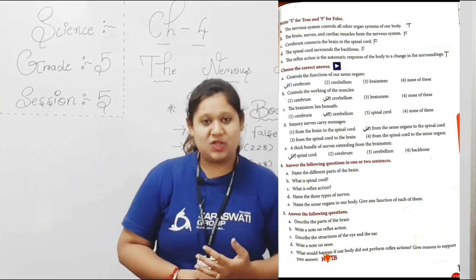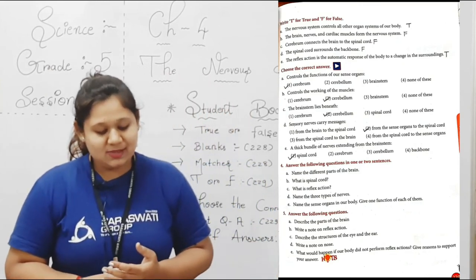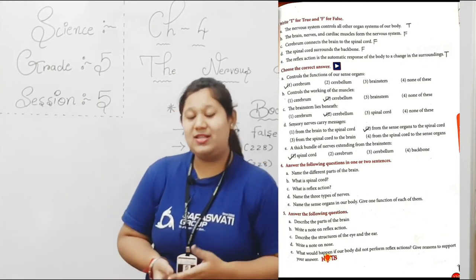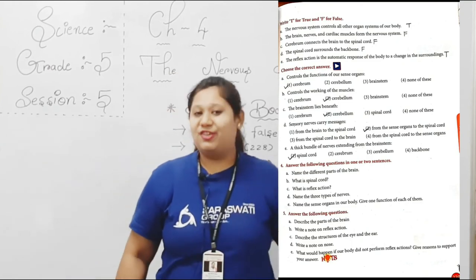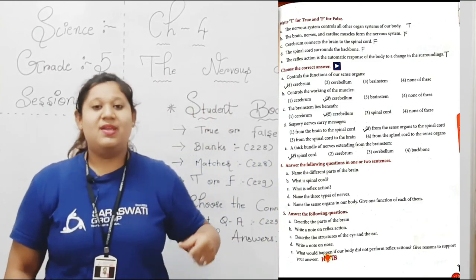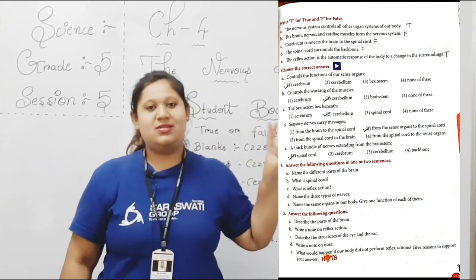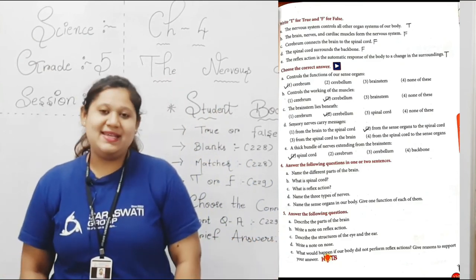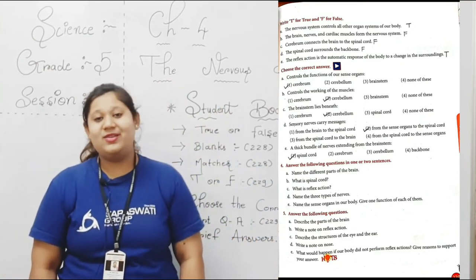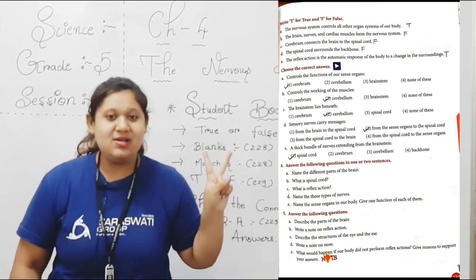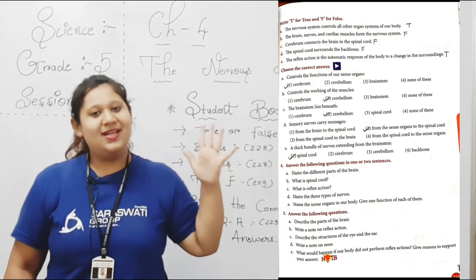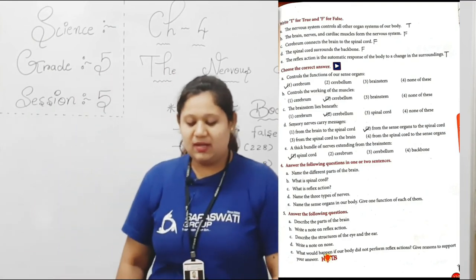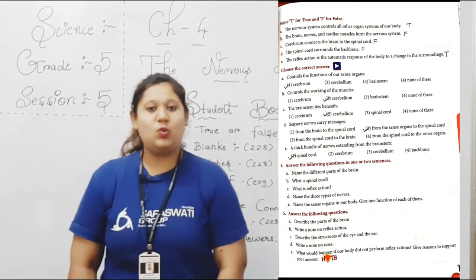Last question, number 5: Name the sense organs in our body. We have five sense organs — eyes, ears, nose, tongue and skin. Here we completed our short question answer.